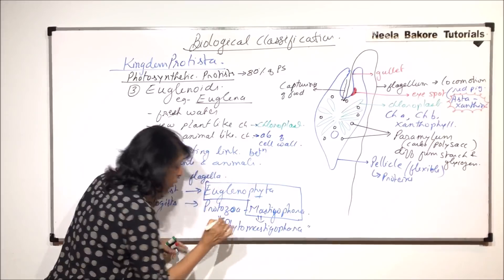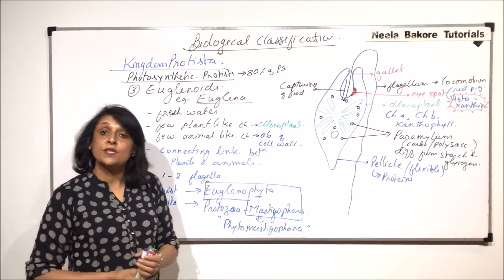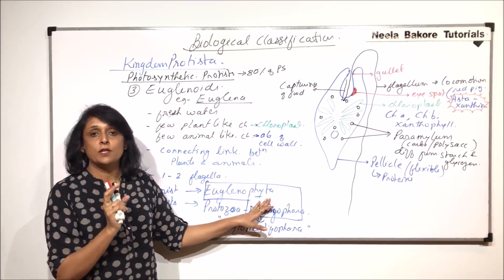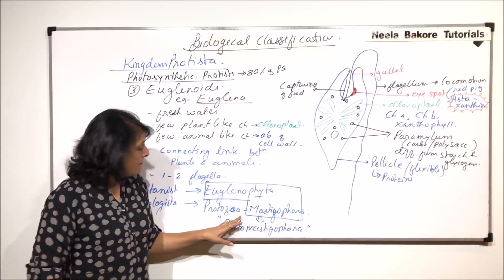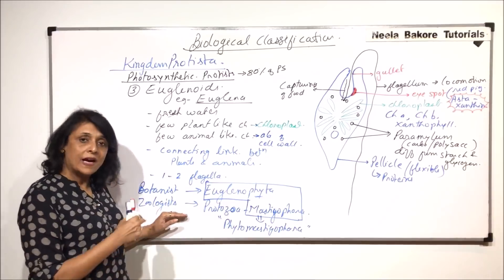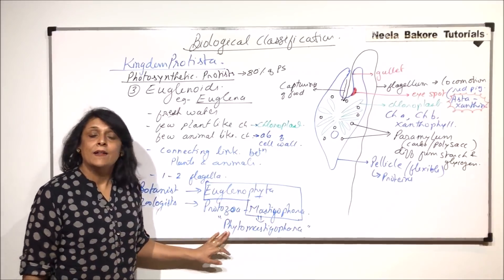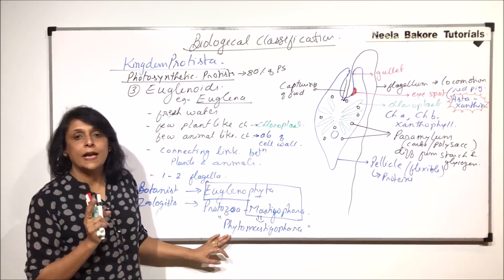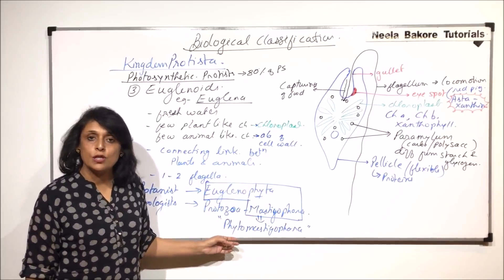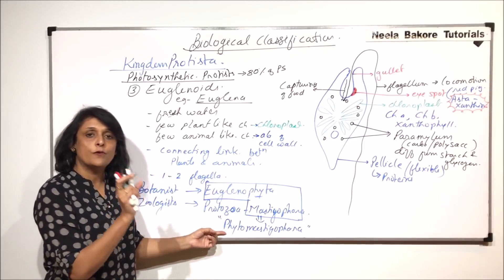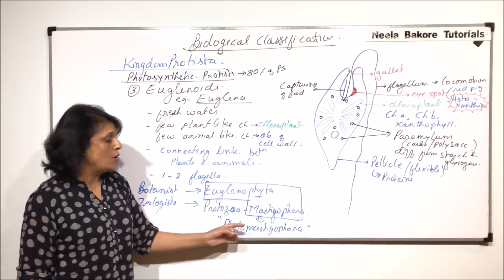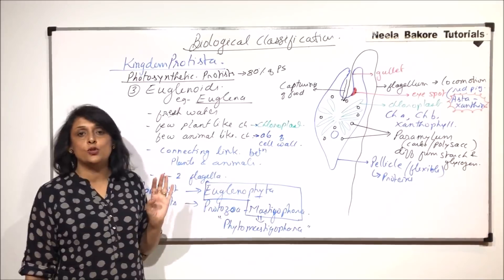We can find all these three terms given. If it is only Euglenophyta, we are talking from the perspective of botanists. When we talk of only Mastigophora, we are talking from the zoologist perspective. When scientists reached the conclusion that it can neither be placed in pure plants nor pure animals, a third term was given that included a word from plant and from animals. So it is now known as phytomastigophora by combining these two terms.